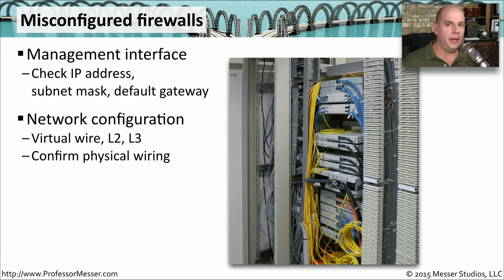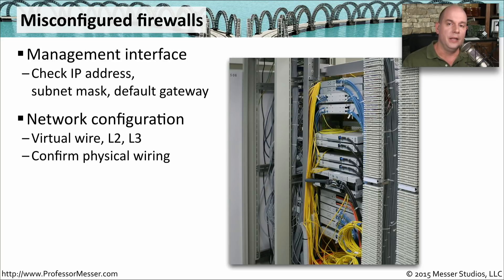Once you know that you can configure the firewall from its management interface, we can look at how the firewall is physically connecting to the rest of the network. In a previous video, we looked at the differences between a virtual wire, a layer two bridged, and a layer three routed configuration for a firewall. You should check how your firewall is configured and confirm that it is connected to the network in the proper way.